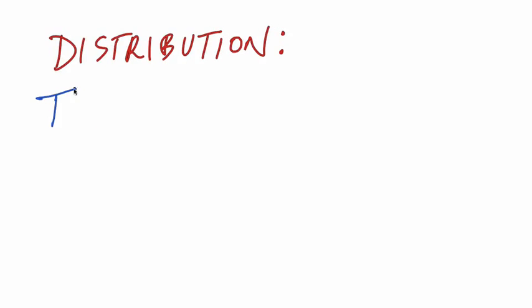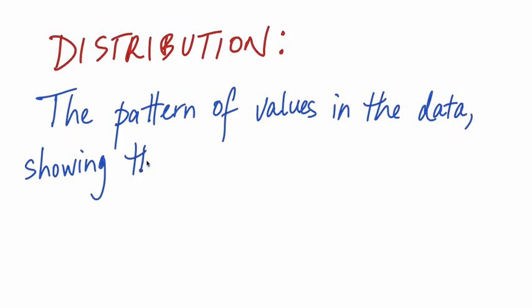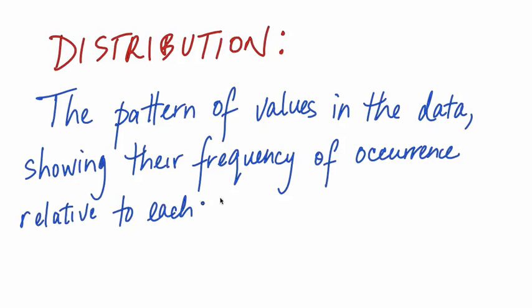The pattern of the values of data is called its distribution. A histogram is useful for visualizing the distribution. We can see whether the data tend to be close to a particular value or maybe multiple values, whether the data varies a lot or a little about the most common values, whether that variation tends to be more above or below the common values, and whether there are unusually large or small values in the data.